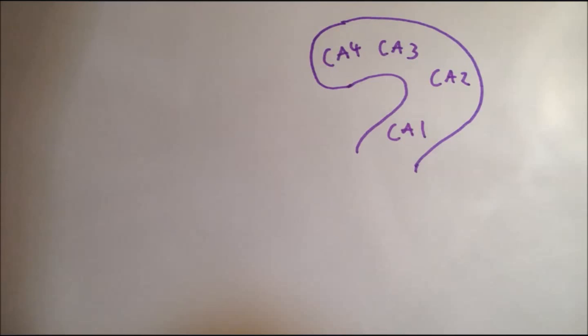There are four of these areas, and they progress in sequence: CA4, CA3, CA2, and CA1. The main cells in this part of the hippocampus are pyramidal cells.